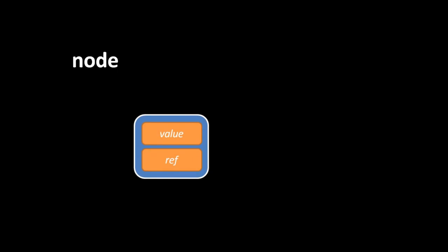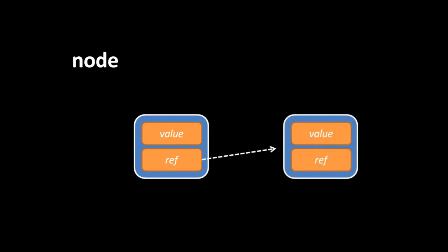Aside from arrays and records, perhaps the simplest data structure is what's called a node. A node is a record with two elements: a value and a reference, which may point to another node. For example, here we have two nodes, with the reference of the one on the left pointing to the starting address of the other node in memory. The point of a node is to represent a value but potentially associate that value with some other value, as pointed to by the reference. Nodes are the building blocks for larger data structures such as the linked list, or in some cases, graphs and trees.